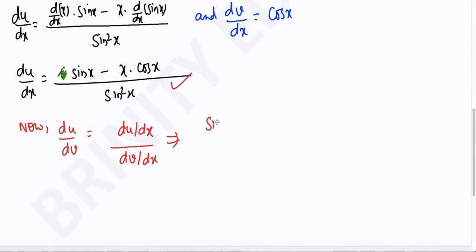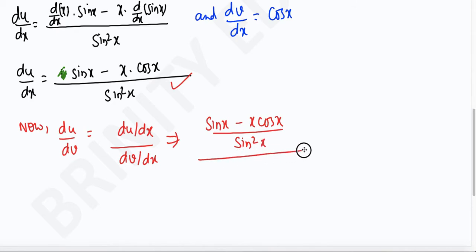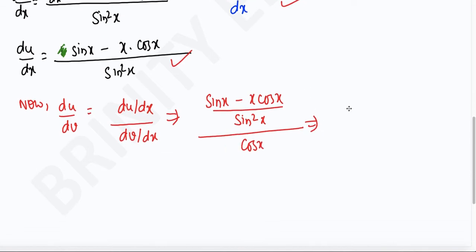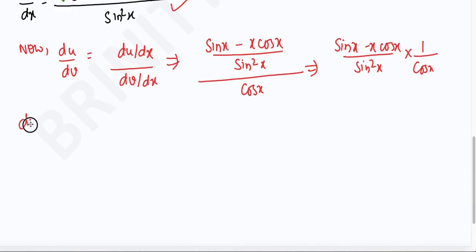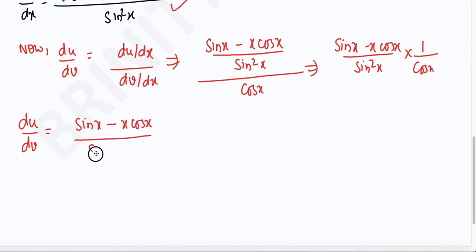So du/dx will be sin(x) minus x·cos(x), divided by sin²(x). And then dividing by dv/dx which is simply cos(x). So you can simplify — this will be sin(x) minus x·cos(x), divided by sin²(x) into cos(x).